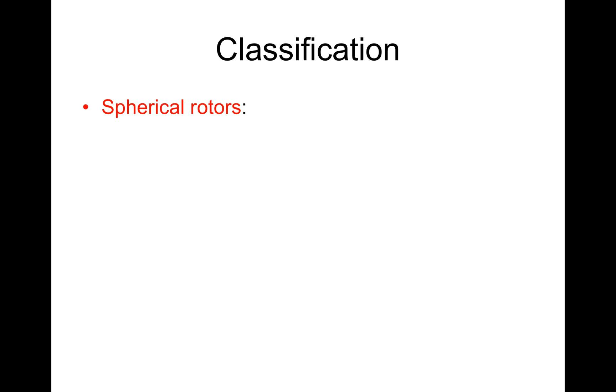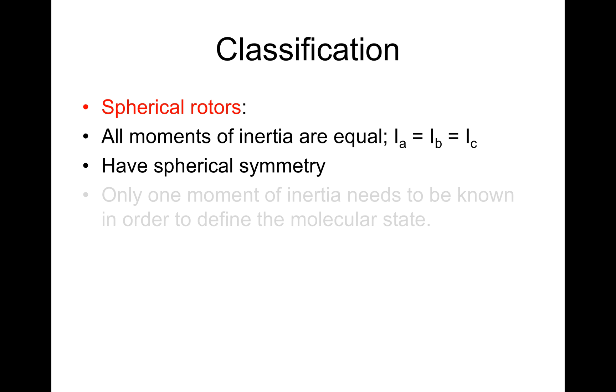Let's begin with a group known as the spherical rotors. In these, all moments of inertia are equal, that is Ia equals Ib equals Ic, and they have spherical symmetry. That therefore means only one moment of inertia needs to be known in order to define the molecular state.